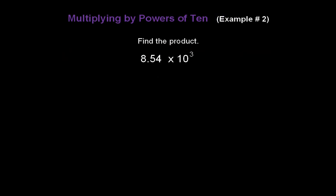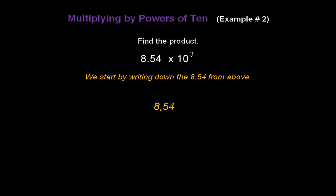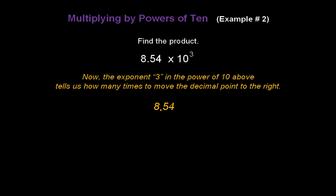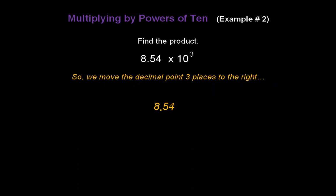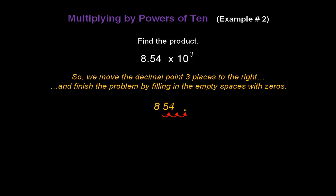Let's do this problem. Find the product of 8.54 times 10 to the third power. We start by writing down 8.54. We know where the decimal is, so we don't need to locate it. The exponent 3 tells us how many times to move the decimal point to the right. So we move the decimal point three places to the right: one, two, three. Finish the problem by filling the empty spaces with zeros. We didn't add three zeros this time — just one. And the answer is 8,540. Always remember to move the decimal place first, then fill with zeros.